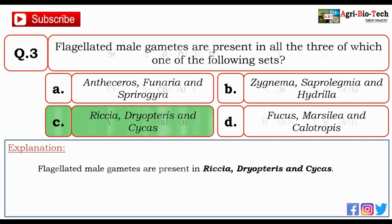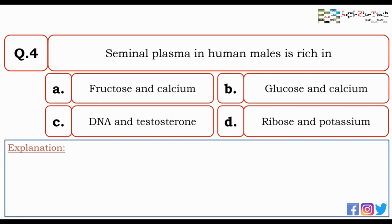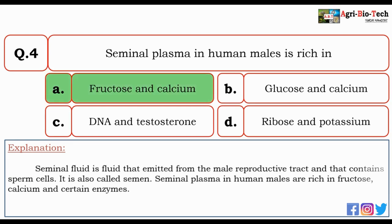Next question: seminal plasma in human males is rich in — fructose and calcium, glucose and calcium, DNA and testosterone, or ribose and potassium? The correct answer is A — fructose and calcium. Seminal fluid is the fluid emitted from the male reproductive tract that contains sperm cells, also called semen. Seminal plasma in human males is rich in fructose, calcium, and certain enzymes.